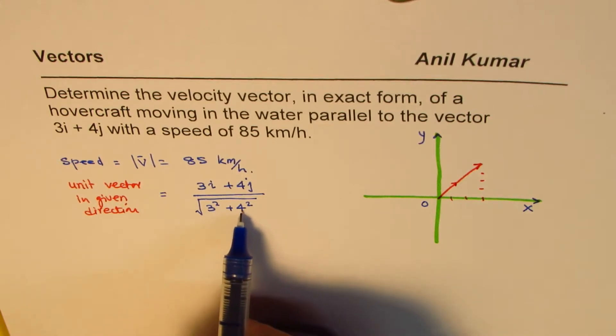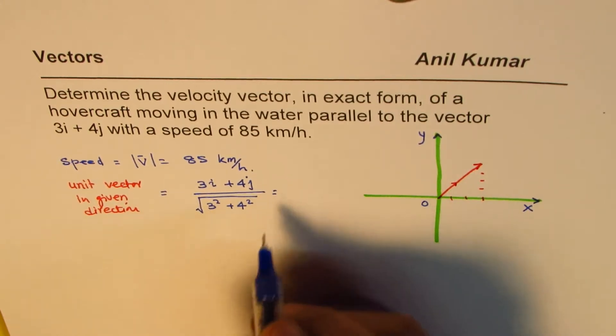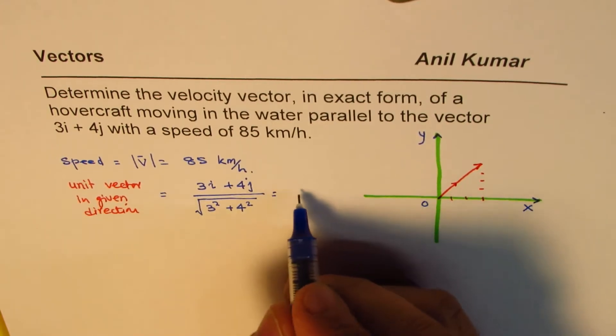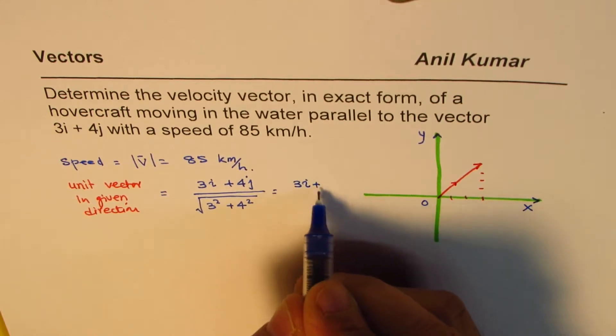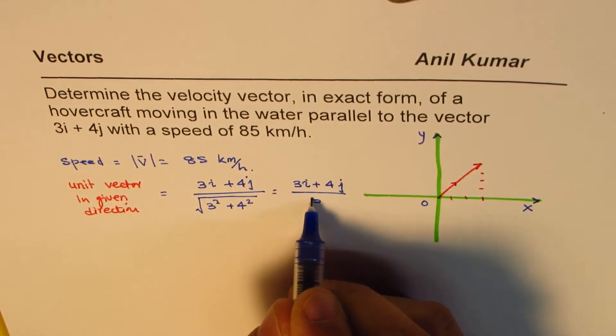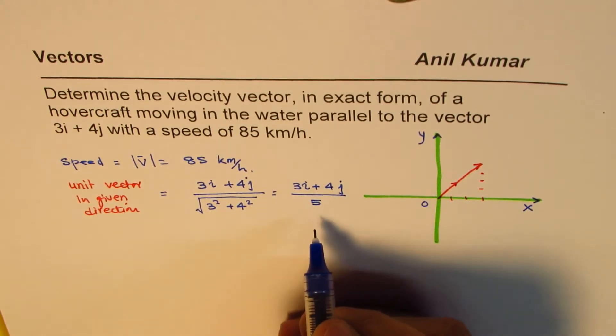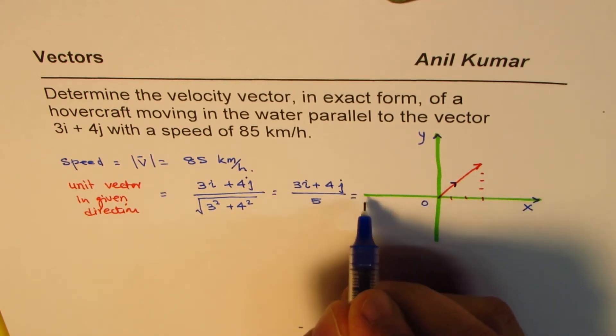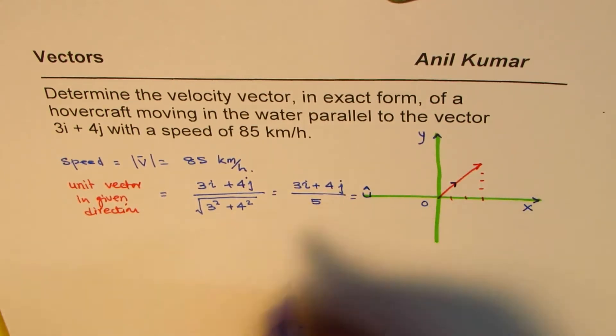Now, 3 squared is 9, 9 plus 16 is 25. So, square root of 25 is 5. So, we get this vector as 3i plus 4j divided by 5. That becomes the unit vector in this particular direction. Let me call this as u unit vector.